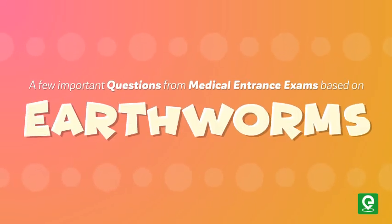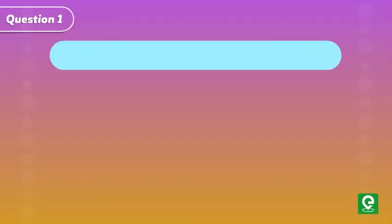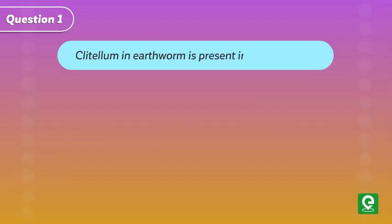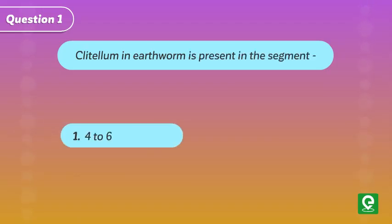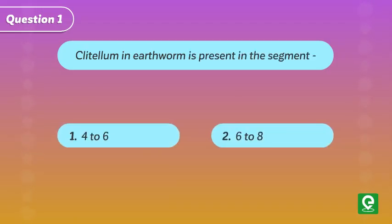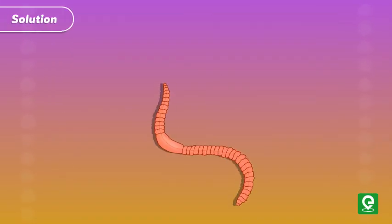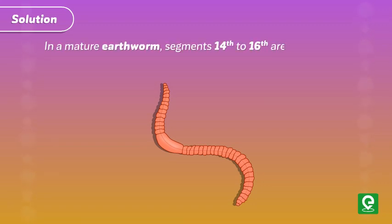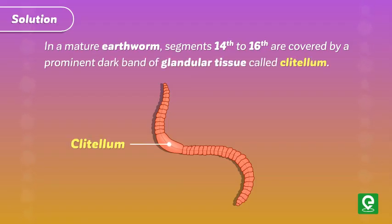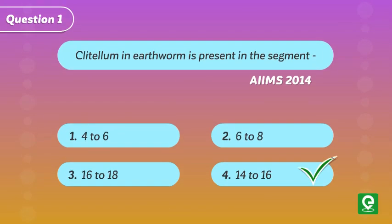Question 1: Clitellum in earthworm is present in which segment? Options: (1) four to six, (2) six to eight, (3) sixteen to eighteen, (4) fourteen to sixteen. This question was asked in AIIMS 2014. Solution: In a mature earthworm, segments 14 to 16 are covered by a prominent dark band of glandular tissue called the clitellum. Hence, option four is correct.